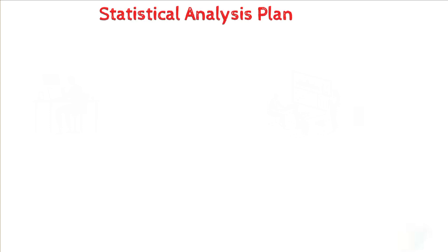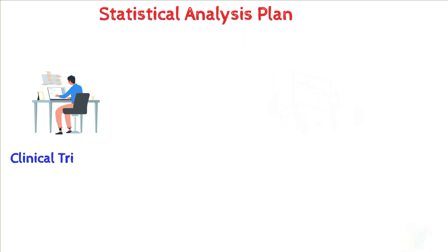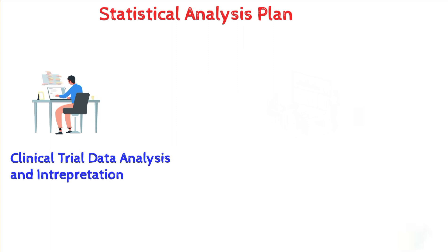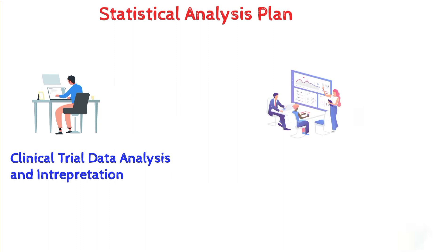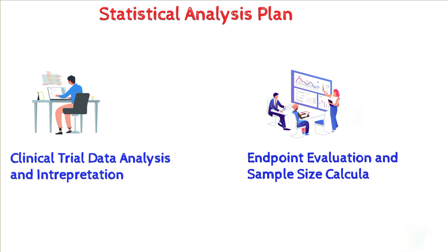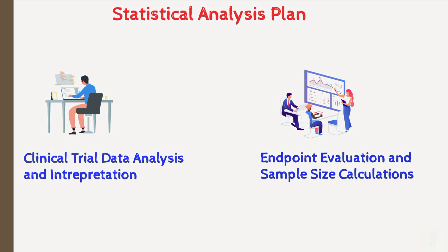The Statistical Analysis Plan (SAP) is a document that outlines how data is going to be collected in the clinical trial and how it will be analyzed and interpreted. The SAP includes information on the statistical methods that will be used to analyze the data, the endpoints that will be evaluated and the sample size calculation. The SAP is reviewed and approved by the regulatory authority before the trial can begin.